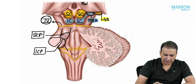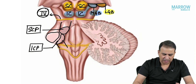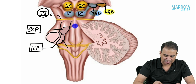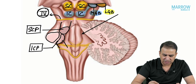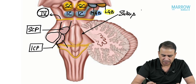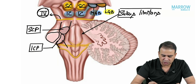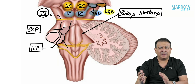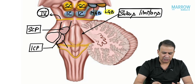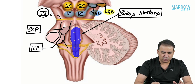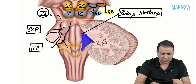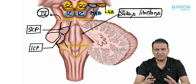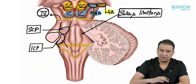In the floor of the fourth ventricle, you can appreciate a midline sulcus and just lateral to it another prominent sulcus — the sulcus limitans, which is embryologically important. The sulcus limitans divides the neural tube into the alar plate and basal plate. Anything medial to the sulcus limitans is motor area (basal plate), and anything lateral to it is sensory area (alar plate).